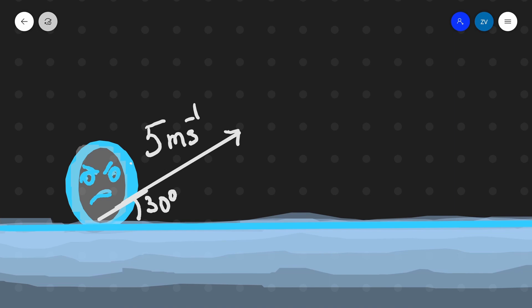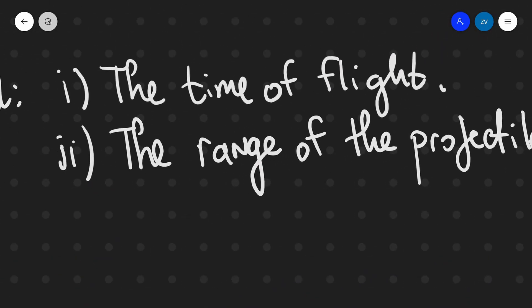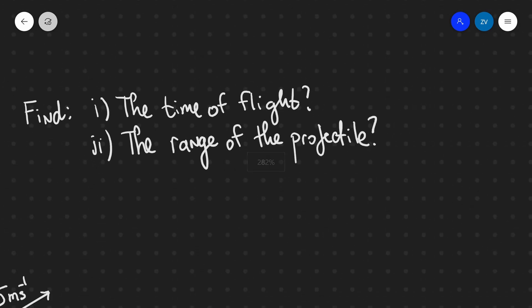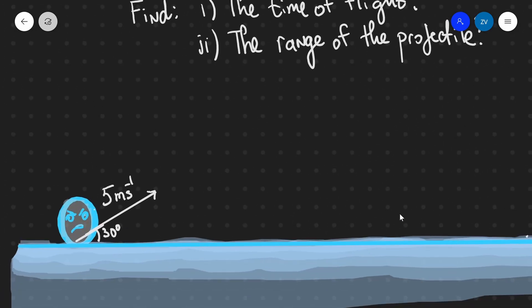What we're going to be talking about today is projectile motion at an angle. To illustrate this, we have a projectile — an angry smiley face — which we're going to project at a speed of five meters per second directed at 30 degrees to the horizontal. I'm going to answer two questions: what will the time of flight be, and what will the range of the projectile be — in other words, how far will it actually go and what will the displacement from the initial position be?